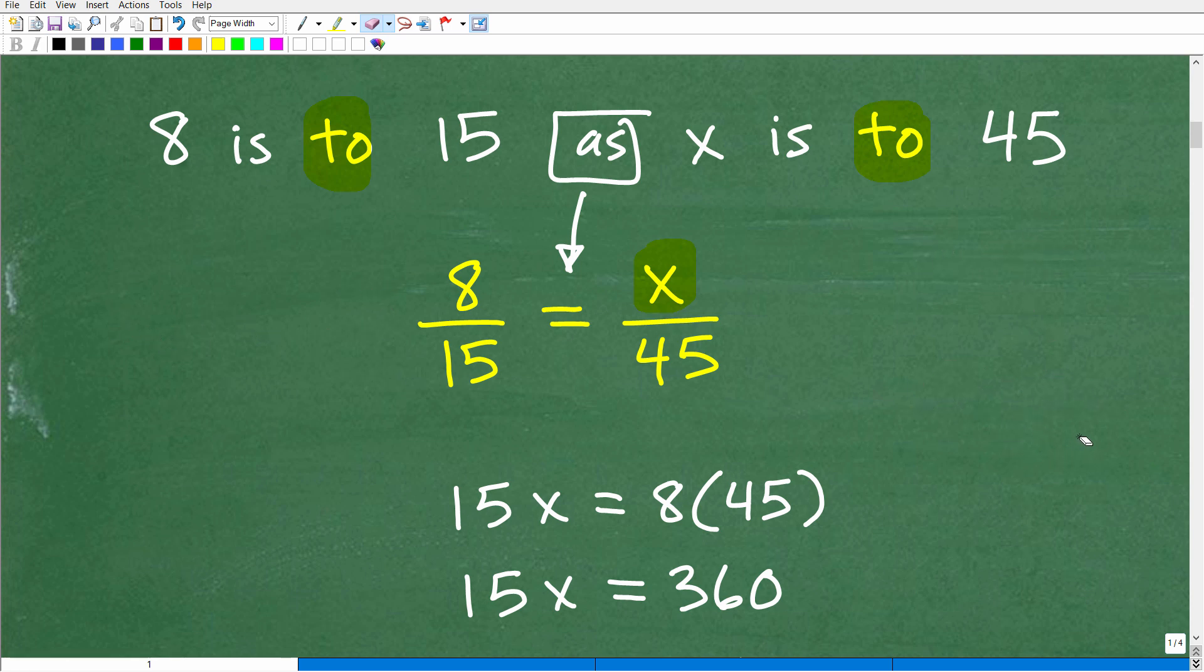So again, we always want to write rates and ratios as fractions because we want to use these concepts of proportions. So we want to express things as fractions and that is the first major step to do this problem. So 8 is to 15 as x is to 45. So what we've done here is set up a proportion. We're saying one fraction is equal to another fraction. So again, this is a proportion because we're saying two fractions are equal.